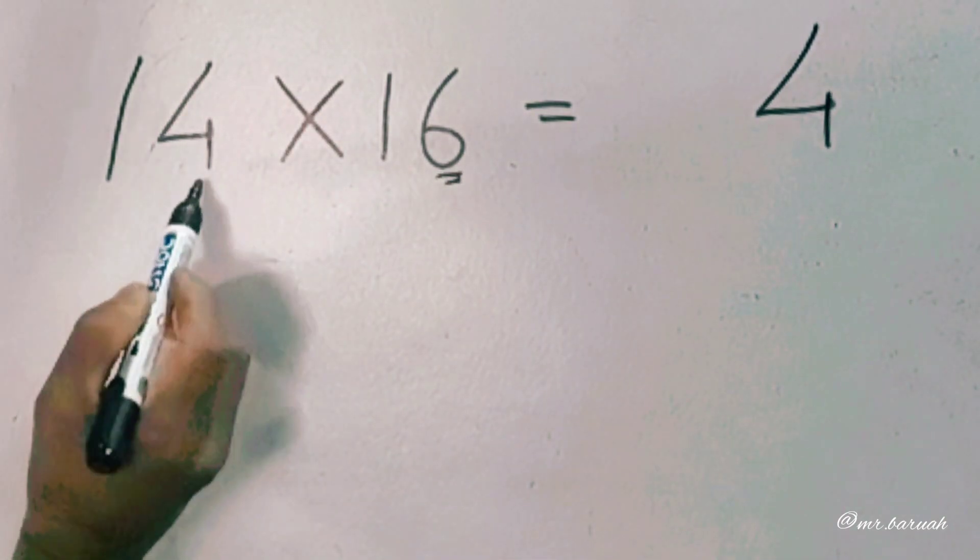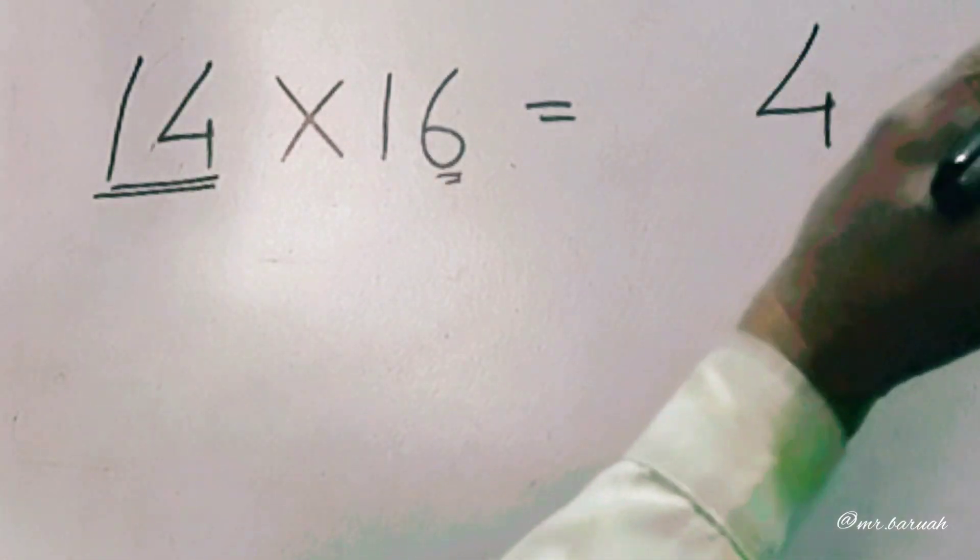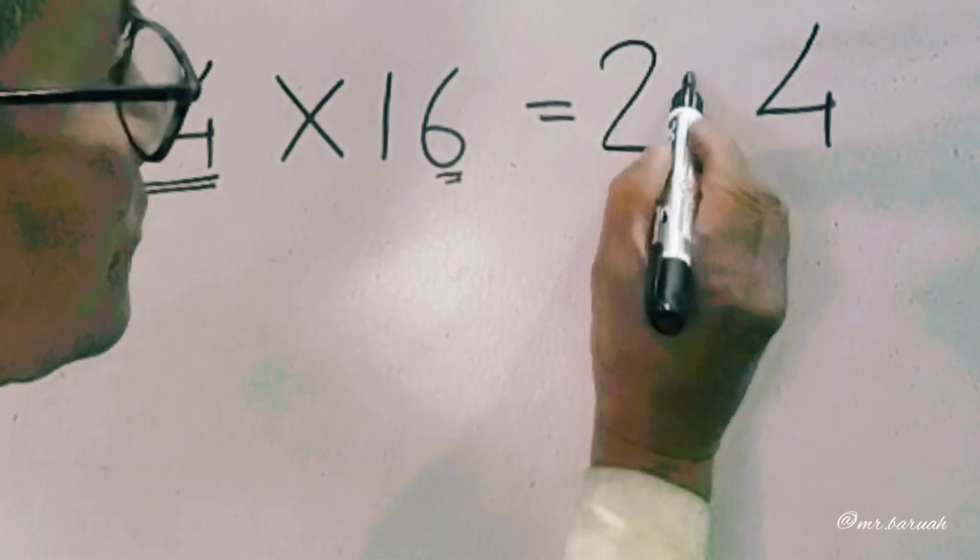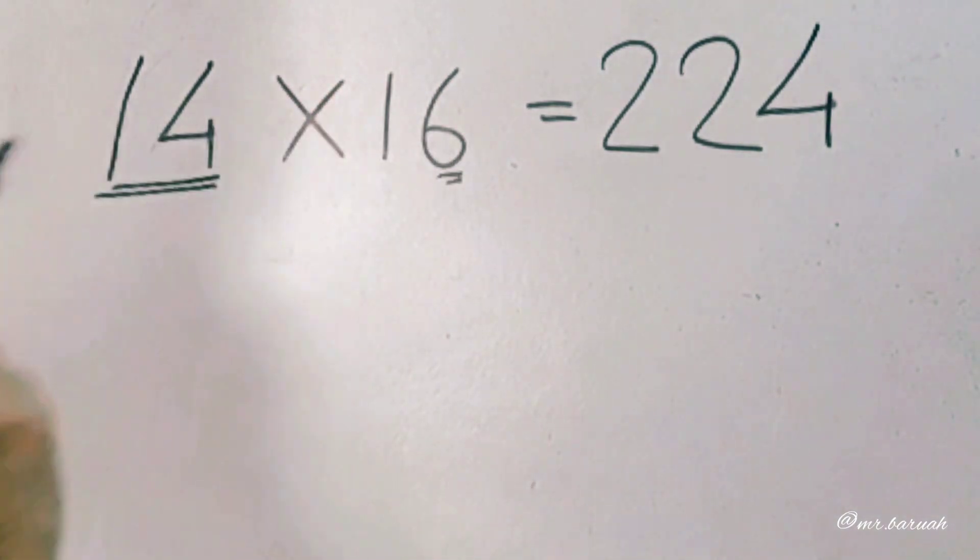6 into 1 is 6, plus 2 in hand. 20, plus 2 in hand, 22. 224. 14 into 16 equals 224.